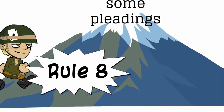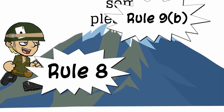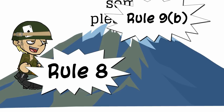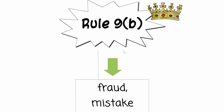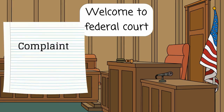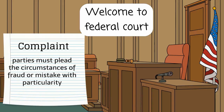But some pleadings in federal court have to go beyond Rule 8 and also comply with Rule 9. Rule 9 applies to pleadings that include allegations of fraud and mistake. Rule 9 requires a pleading in federal court to state the circumstances of fraud or mistake with particularity.